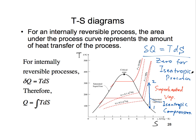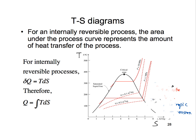The other thing we can see is that if we have a process on the TS diagram, the area underneath the curve should be equal to the heat added to the system for a reversible process.